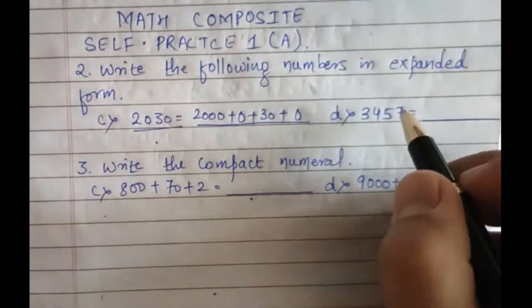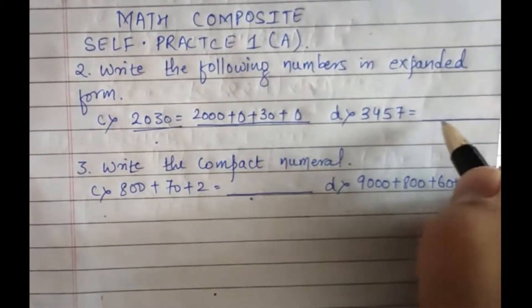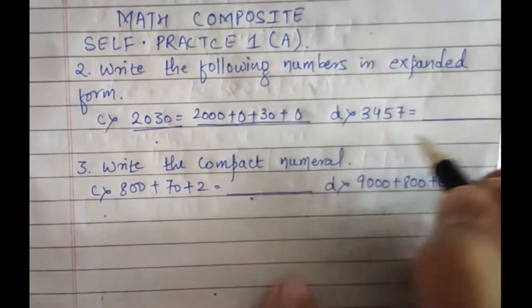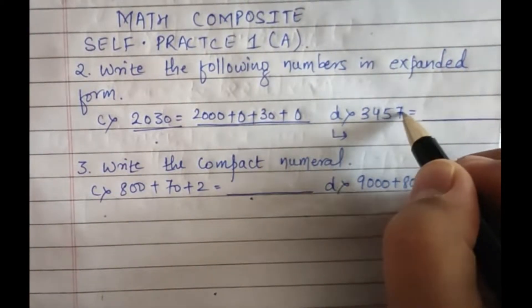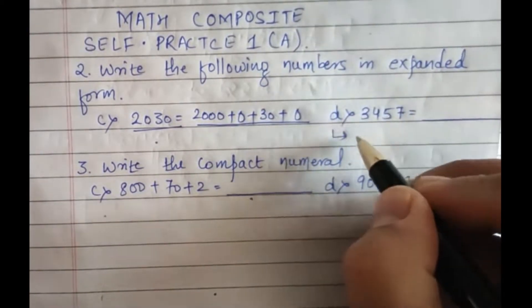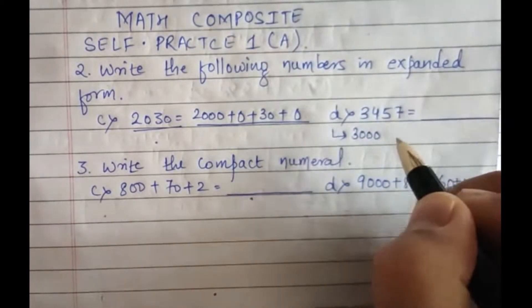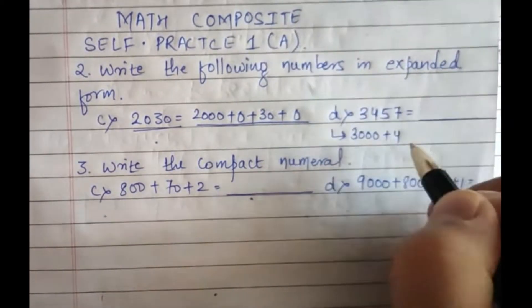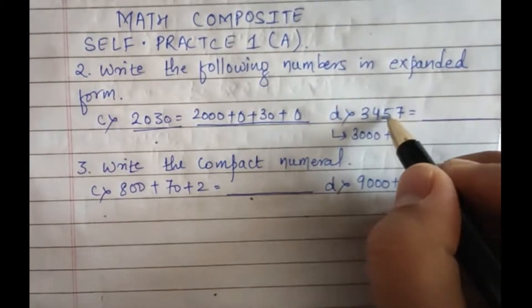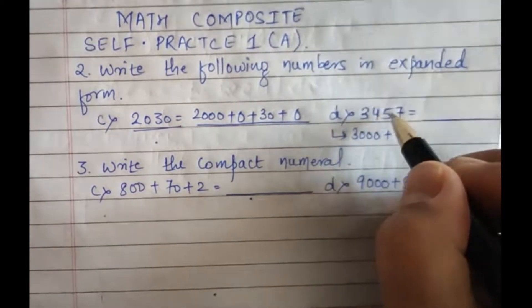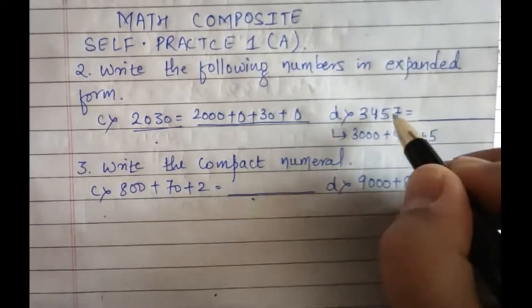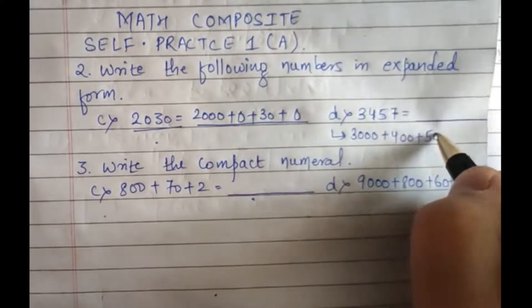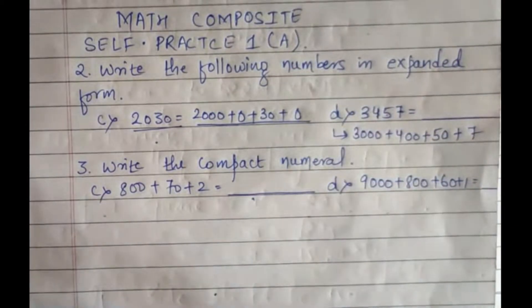Next, we have 3457. We write it in the ones, tens, hundreds, thousands positions: three thousand, plus four hundred, plus five tens — how many digits after five? One digit — so plus seven. We expand it in this way.